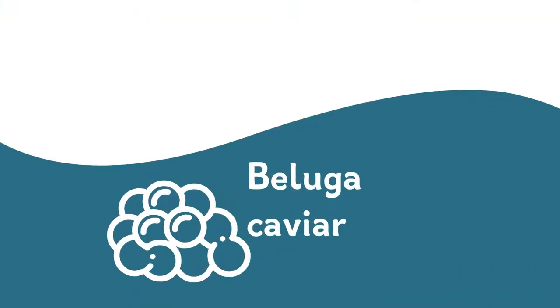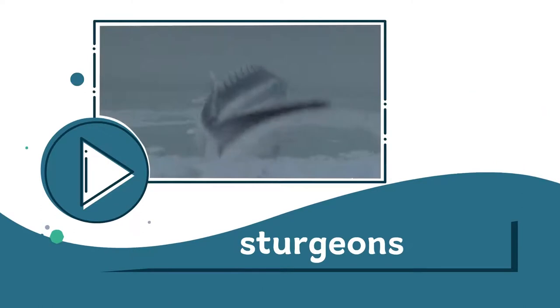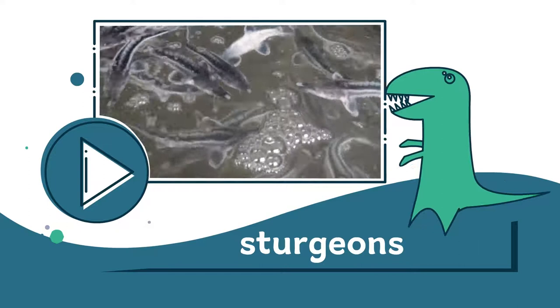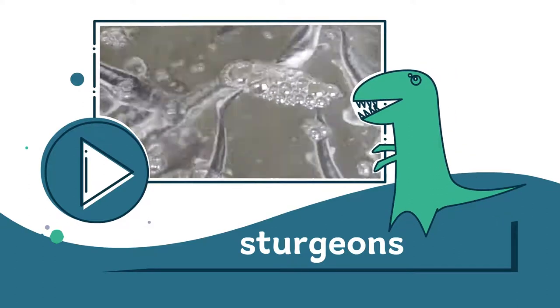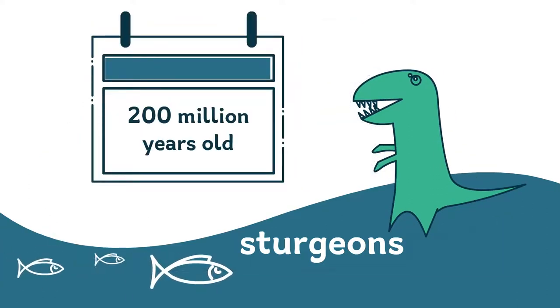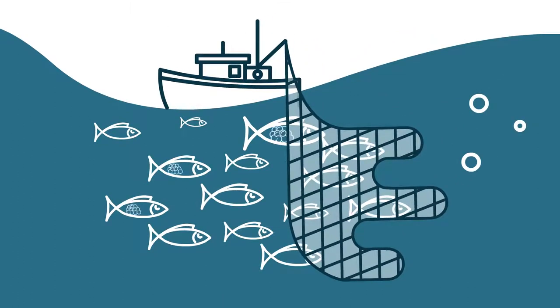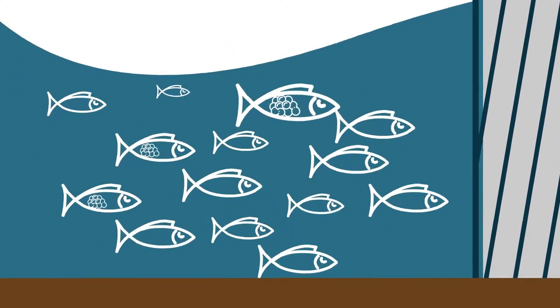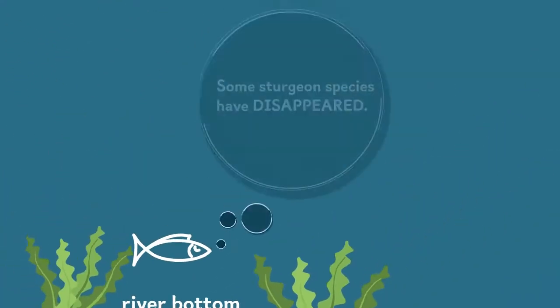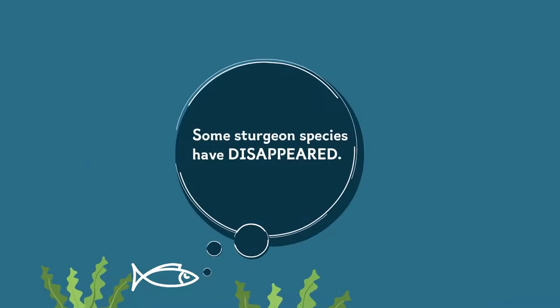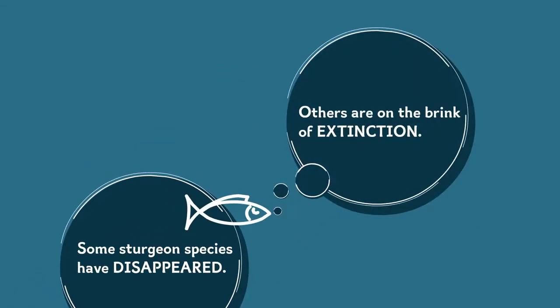Beluga caviar exists thanks to the sturgeons, these amazing fish that, can you imagine it, are as old as dinosaurs. A species that is 200 million years old. However, things are not going well for them today. Simply imagine, who wouldn't want to catch a female sturgeon with caviar? Due to overfishing or due to damming of rivers and changes of the river bottom, some sturgeon species have disappeared, and others are on the brink of extinction.